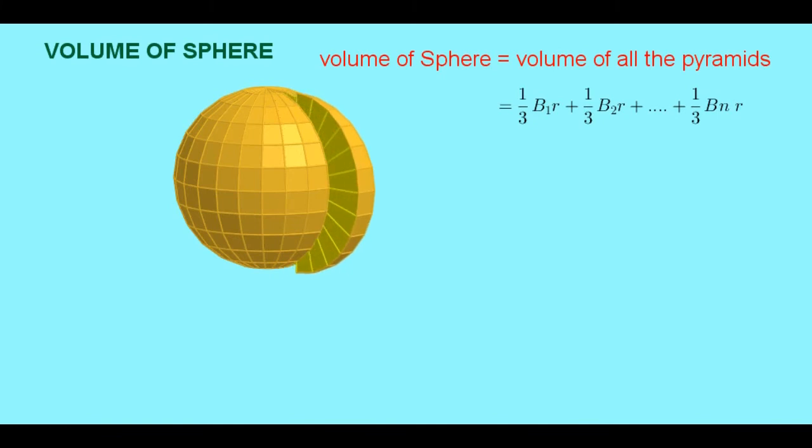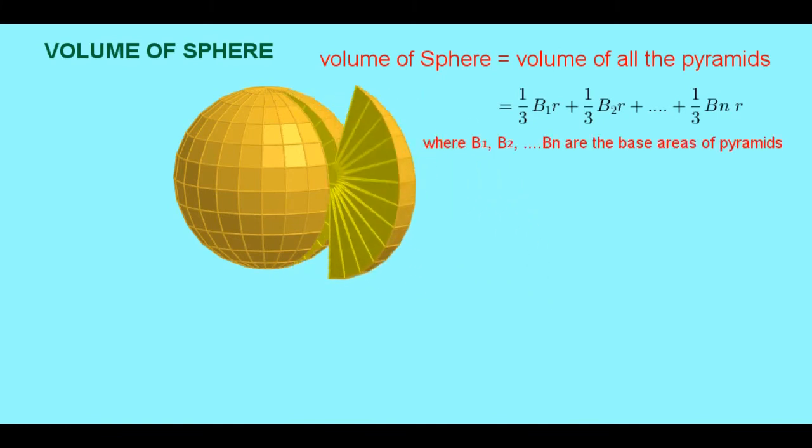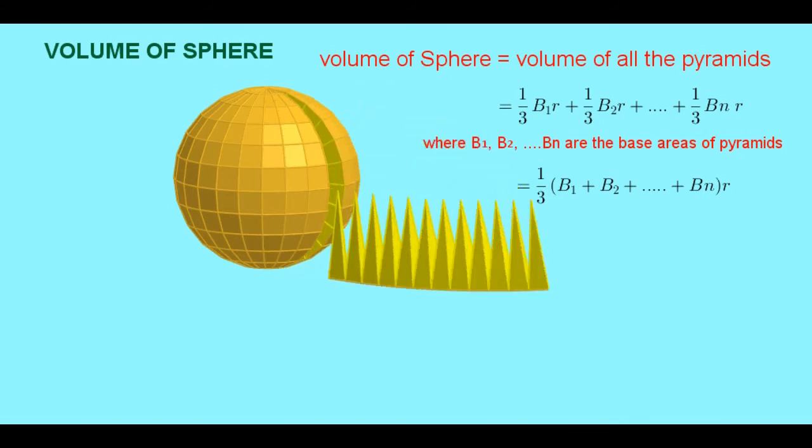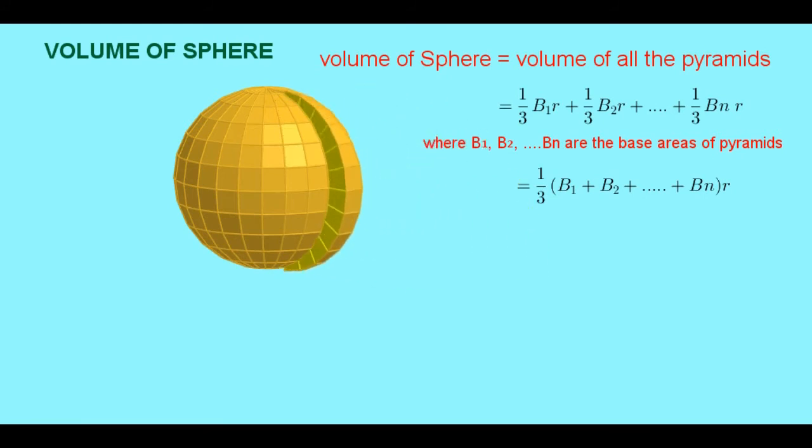gives us volume of sphere. So by simplification we get 1 by 3 into sum of all base areas of pyramids into radius.